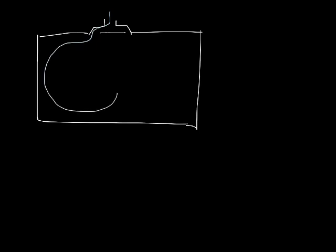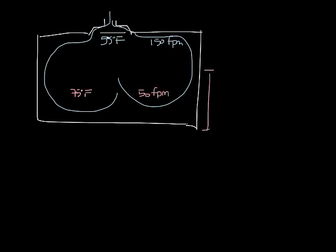So if we look at that, it looks something like this. Put a diffuser in, draw a little room, and the air is going to roll the room something like this. So what you have is 55 degree air, and it's 150 feet per minute somewhere shortly outside the diffuser. It rolls the room and mixes and becomes 75 degrees and 50 feet per minute in the occupied space.